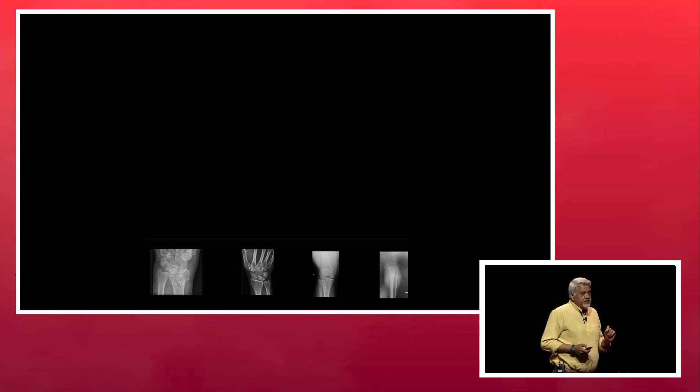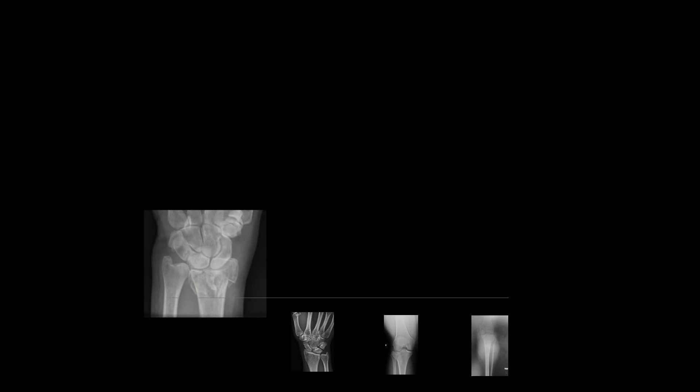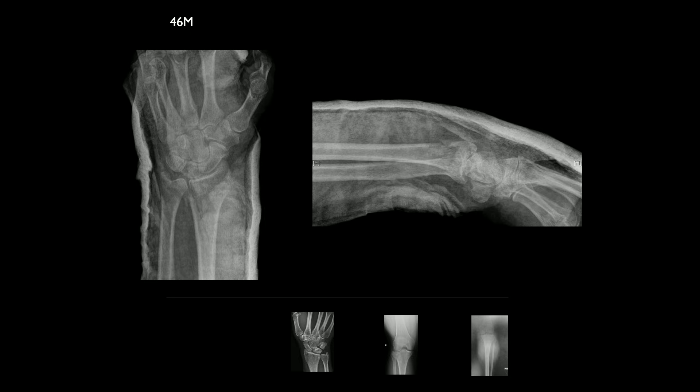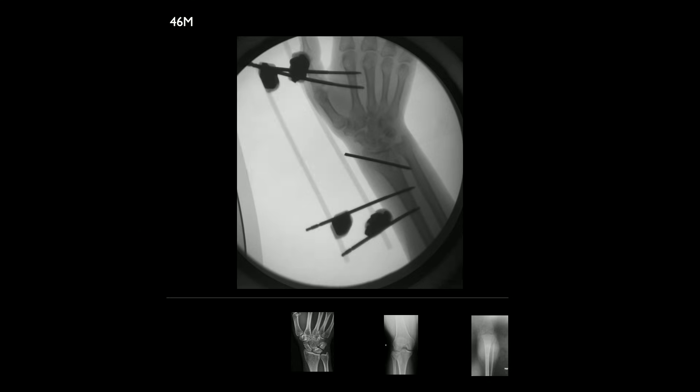I'll show you four cases. This is a 46-year-old fall on outstretched hand. I don't think there's a diagnostic dilemma as to what's wrong here. He gets reduced in the emergency department. It's a pretty bad fracture. When he gets to orthopedics, it ends up being surgical.